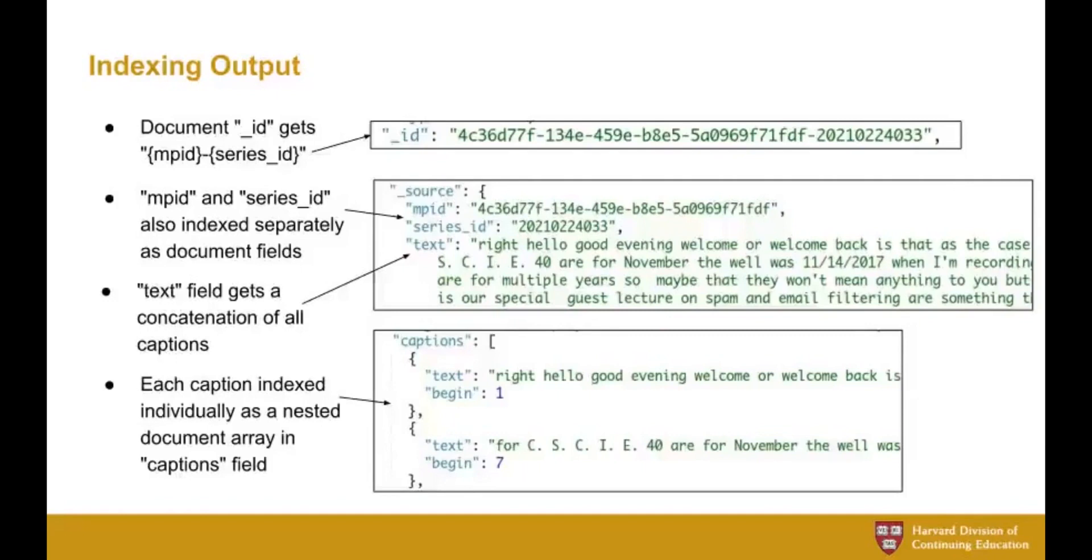Every Elasticsearch document has an ID field, and we chose to create our own based on the media package ID and the series ID. That lets us easily update the documents, like if the transcript content were to change. We also add those the media package and the series ID fields as separate fields so that we can easily search within a specific lecture or across a series. And then we include the caption content twice. We index it once as a large text field that concatenates all of the individual chunks together, and then we index it again as an array of nested documents, each with its own short chunk of the captions and the begin time value in seconds.